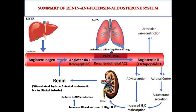This causes arterial vasoconstriction. Angiotensin-2 also acts on the adrenal cortex, stimulating the secretion of aldosterone. Aldosterone promotes reabsorption of water and sodium in the kidney tubules, increasing blood volume. As blood volume and blood pressure increase, the renin production is reduced. So this is the summary of the renin-angiotensin-aldosterone system.